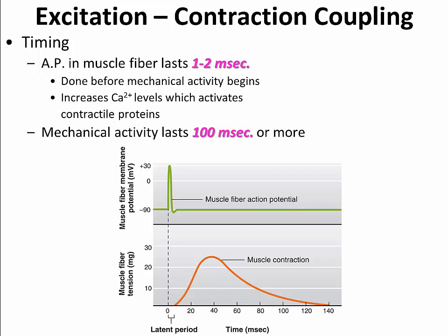In Figure 9.10 on page 265, we see a difference in the length of time the action potential persists versus the tension created by muscular contraction. The action potential lasts just a couple of milliseconds and then it's gone. Interestingly, the tension generated by muscle contraction doesn't even start until the action potential is completely gone, then it rises and persists for 100 milliseconds or more. The question is: why does it take so long for tension to generate even though the action potential is quite rapid?